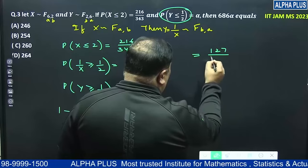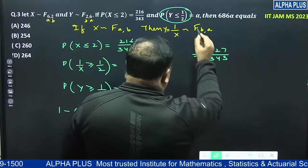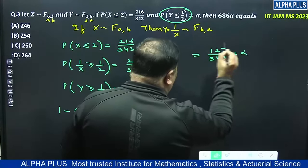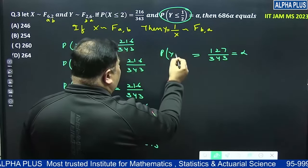127 upon 343, right, which is alpha. Which is alpha as you rightly said Y is less than equal to half.